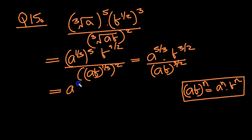So we've got a to the 5 thirds, b to the 3 over 2, on top. Underneath we'll have a to the 3 over 2, and b to the 3 over 2. So they're the same, they'll cancel.